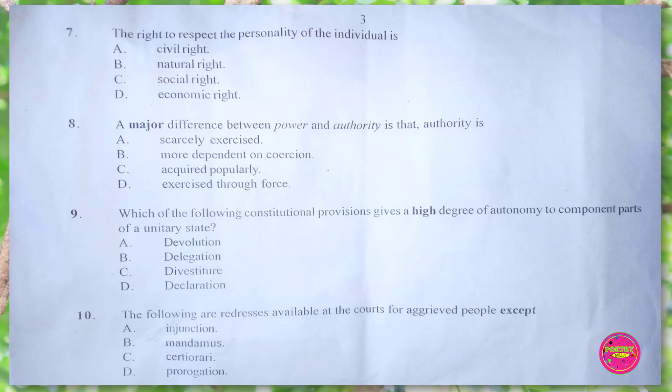Question 10. The following are redresses available at the court for aggrieved people except: A. injunction, B. mandamus, C. certiorari, D. prorogation. The correct answer is D. prorogation.